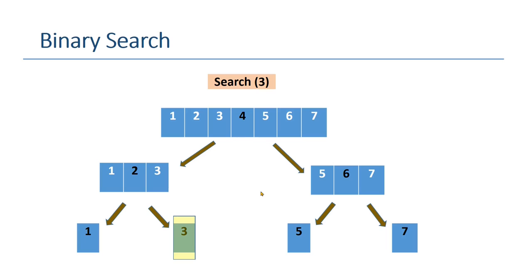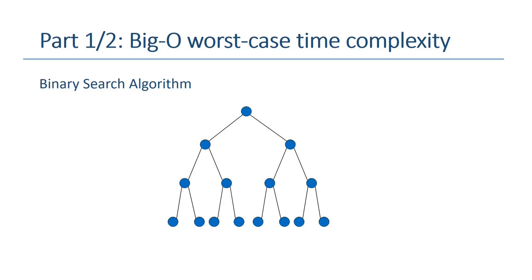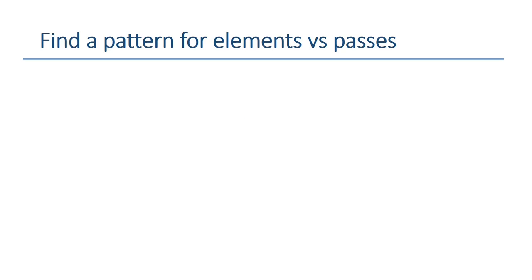Otherwise, it returns a message that the item has not been found. The first part of this video is to determine the big O order of the binary search for its worst-case time complexity. To solve these kind of problems, first we need to find a pattern for elements versus passes.